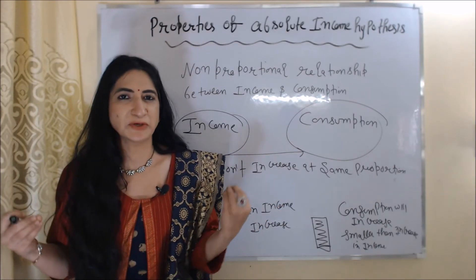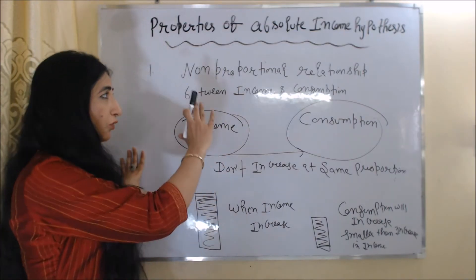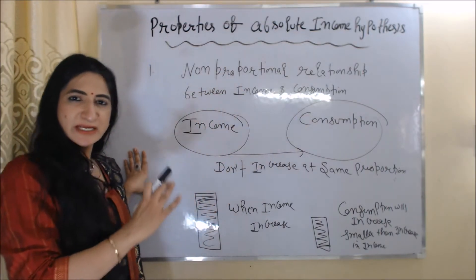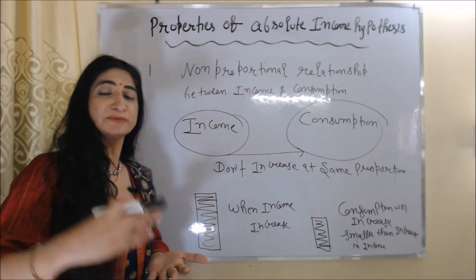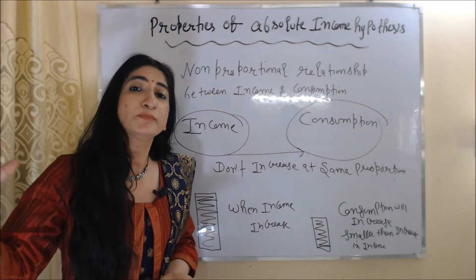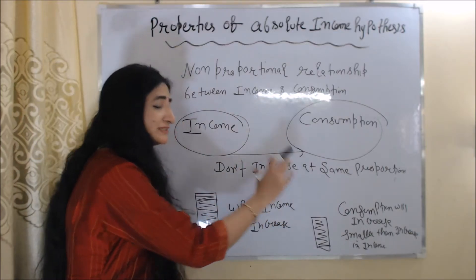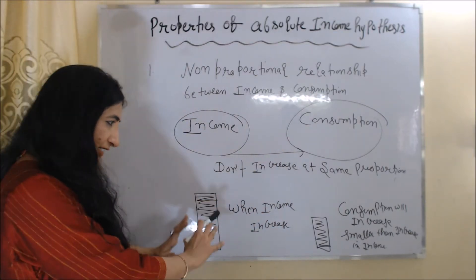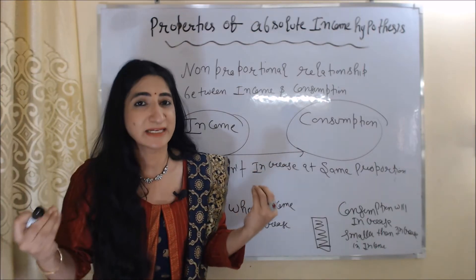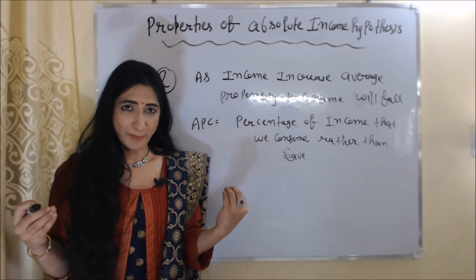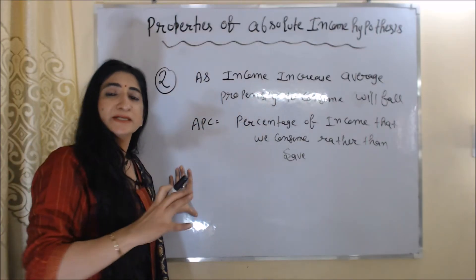Now we will see the properties of the Absolute Income Hypothesis. The first property is a non-proportional relationship between income and consumption. According to this hypothesis, income and consumption do not increase at the same proportion — when income increases, consumption will increase by a smaller amount than the increase in income.